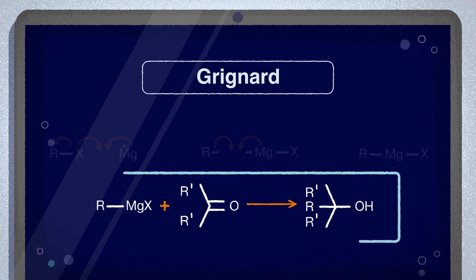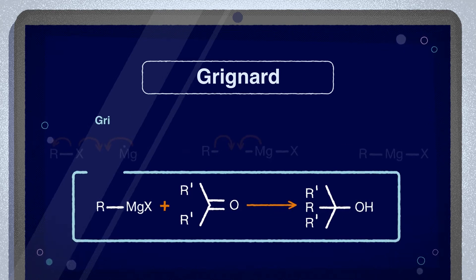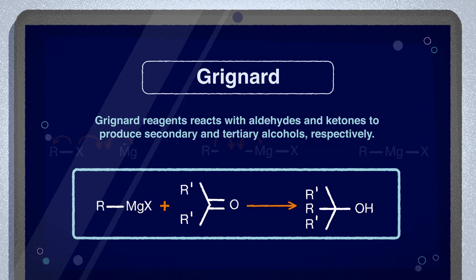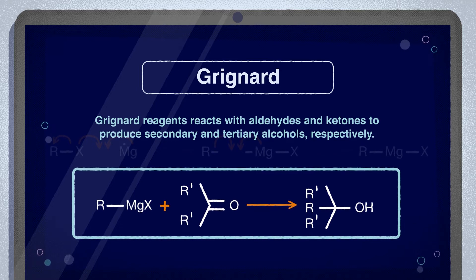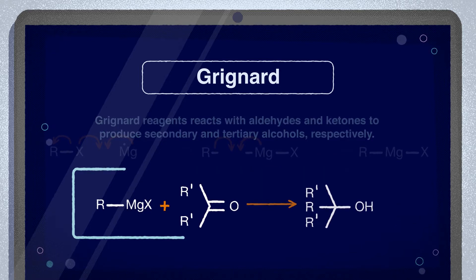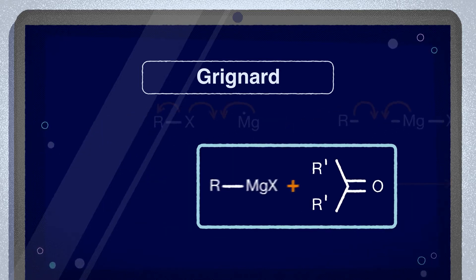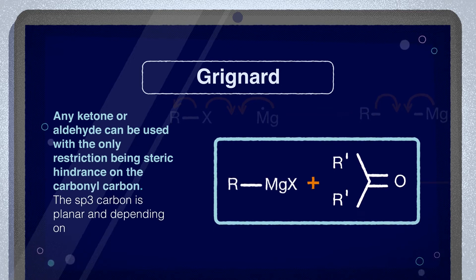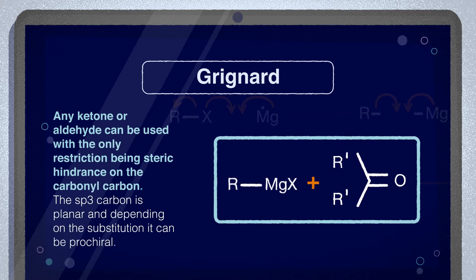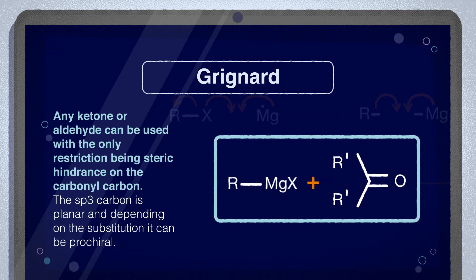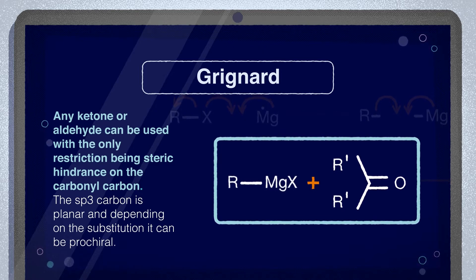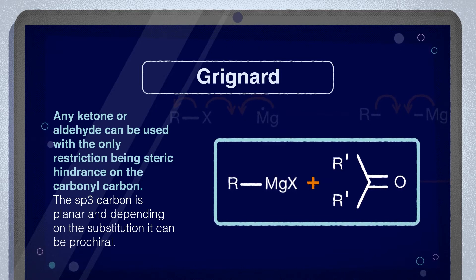Grignard reagents react with aldehydes and ketones to produce secondary and tertiary alcohols respectively. Any ketone or aldehyde can be used, with the only restriction being steric hindrance of the carbonyl carbon. The sp3 carbon is planar and, depending on the substitution, it can be prochiral.